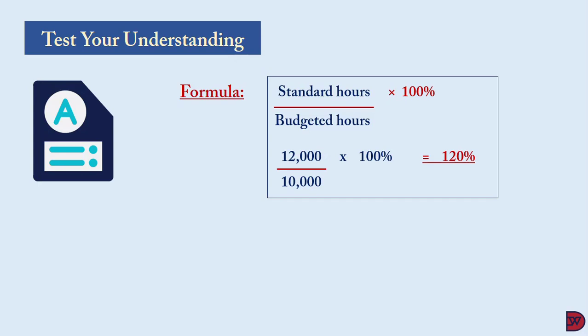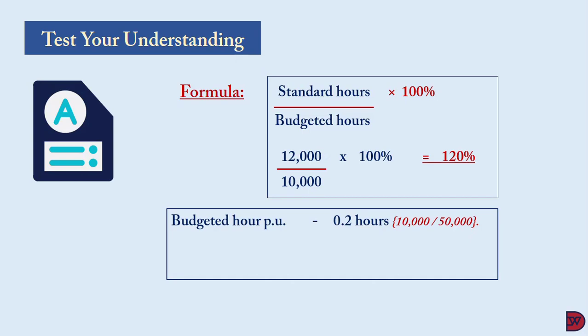This means the business produced 20 percent more than budgeted within the available time. For the workings: budgeted hours per unit is 0.2 hours (10,000 hours divided by 50,000 units). Standard hours for the actual output of 60,000 units is 12,000 hours (60,000 times 0.2). Here the business is concerned about the productive result of labor — they were supposed to produce 50,000 but produced 60,000, so the business exceeded their target. Thank you very much for watching, God bless you.